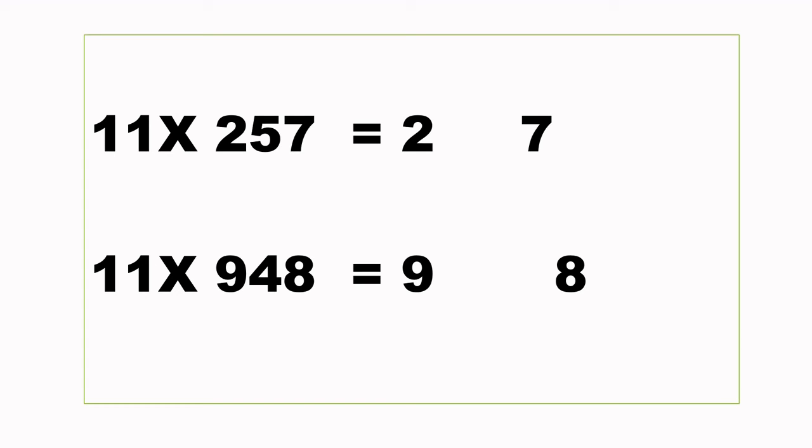This trick can be used for any number, but it becomes complicated as the numbers become larger. Let's try these two examples. We are adding right to left, and we are going to add these three digits. Our last digit does not change, it's still 7.